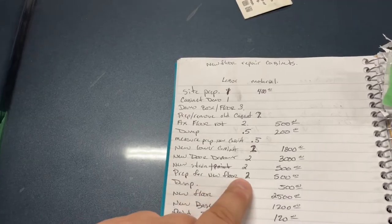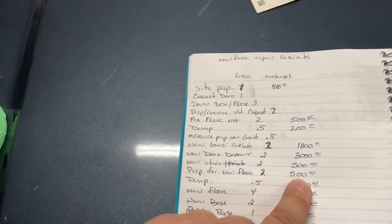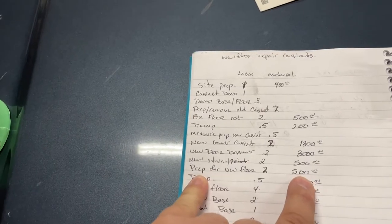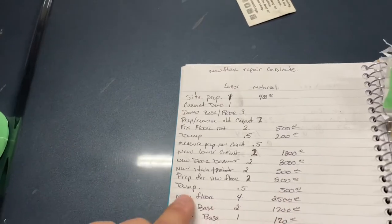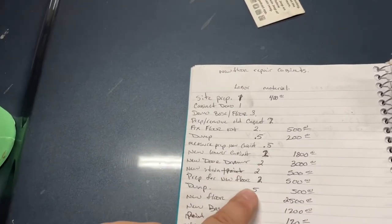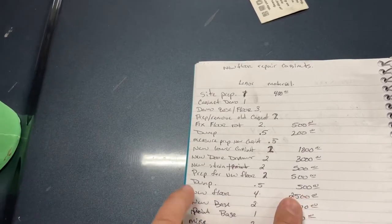It's prep for new floors, two guys, one day. So that's two man days and about $500 in just floor prep. So that's going to be just making sure that everything is ready to go for the new floor. Again, at that point, we're going to the dump again. So another half day and about $500 for the dump.